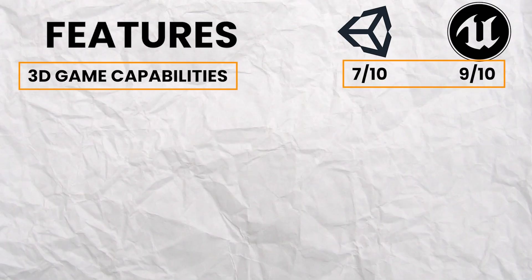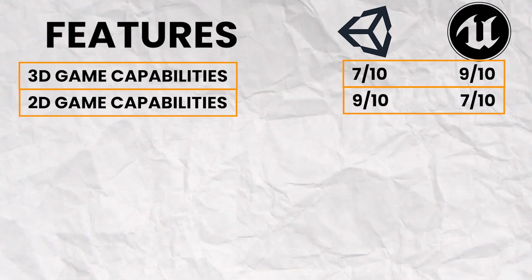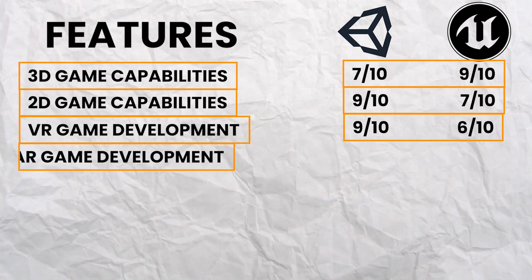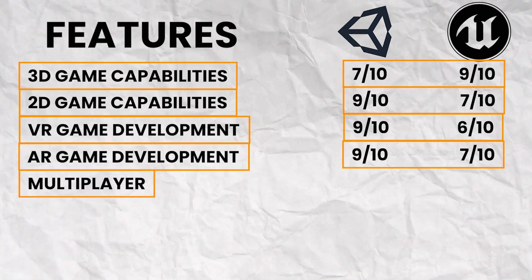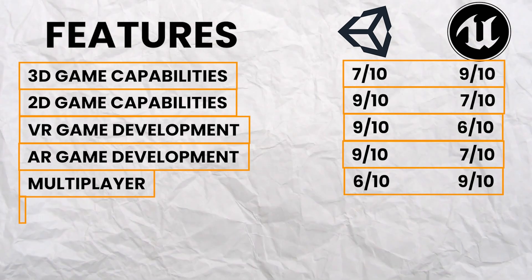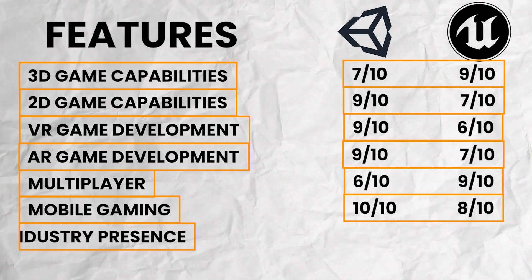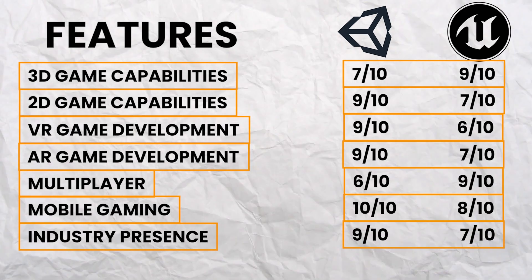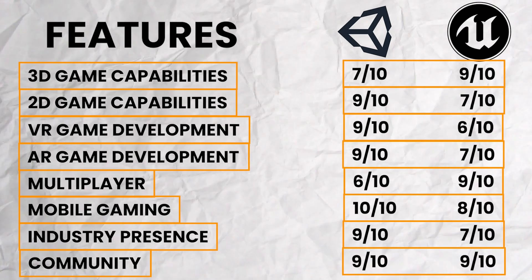Here is a straight-up comparison: For 3D game capabilities, Unreal scores above Unity. For 2D game capabilities, Unity is the king. For VR and AR game development, Unity has a clear edge. For multiplayer, Unreal is the clear winner. For mobile game development, both are good but Unity is better. For industry presence — how many companies are using each engine — Unity is the king. For community, both have a really good and vibrant community, and both are essentially equal.